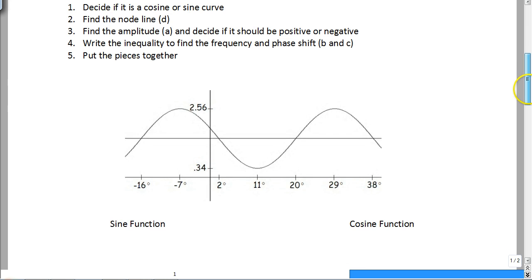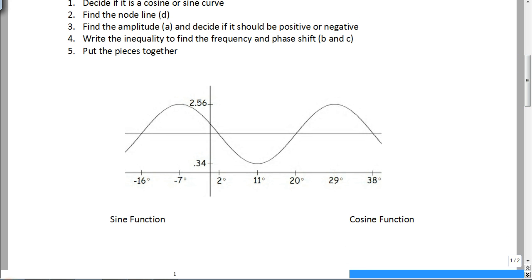So this is what we are going to do. So you know your crest is 2.56. You know your trough is 0.34. So all you have to do is figure out the average of those two and that will help you find your node and the amplitude. So to get from here to here, top to bottom, so top to bottom is 2.22. All you have to do there is subtract.